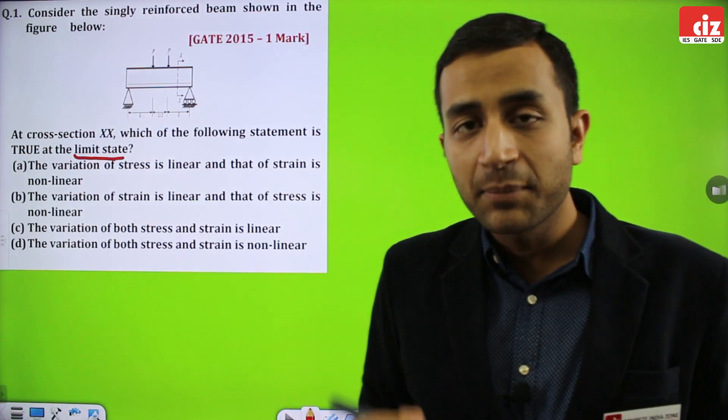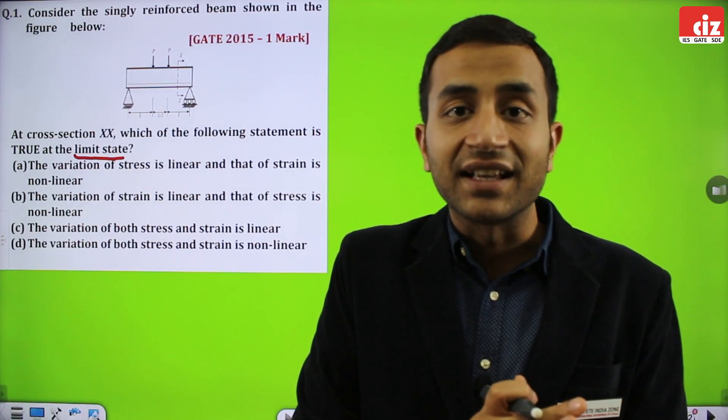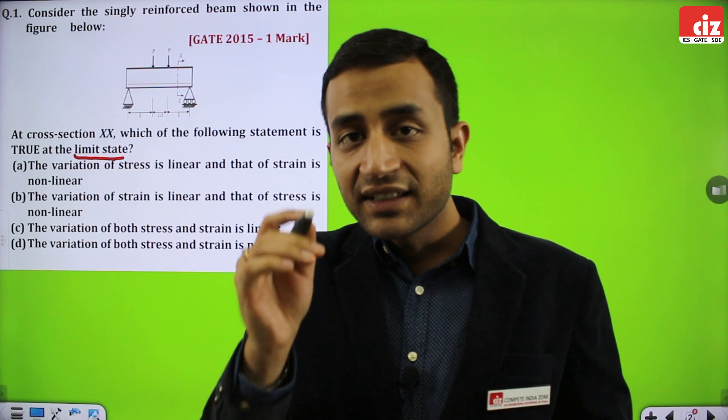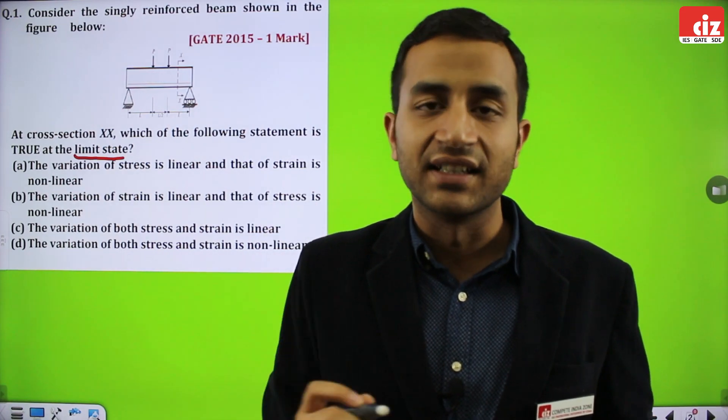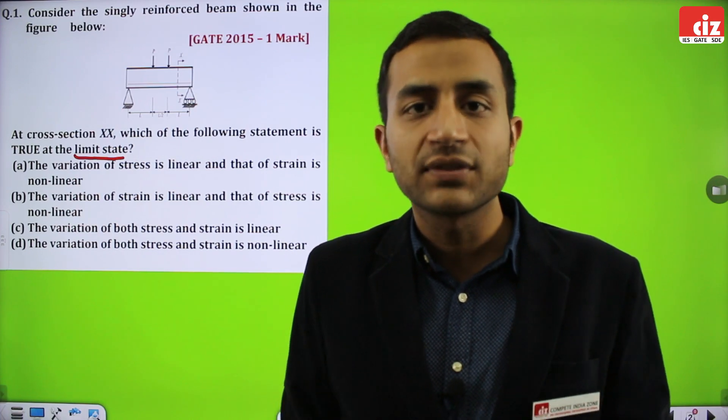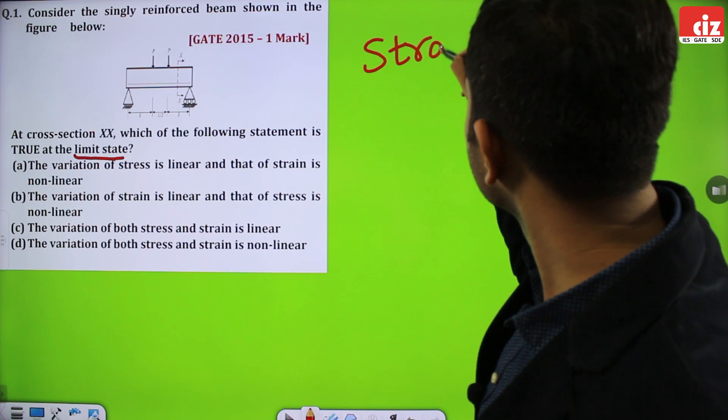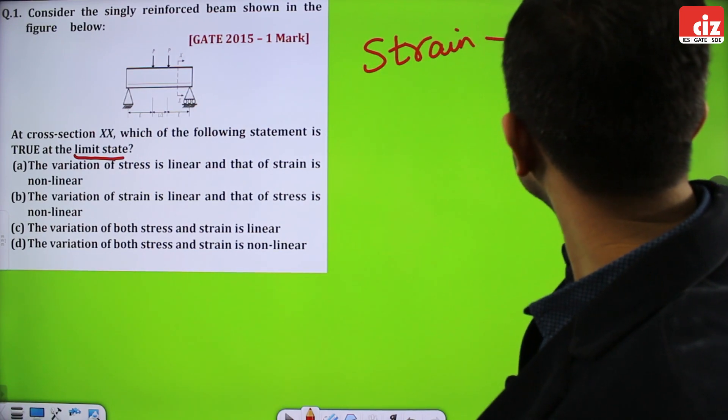We have to keep a basic assumption of the design of structures. What is the assumption? The plane sections which were plane initially, they remain plane even after bending. This implies that the strain diagram is always linear. The strain diagram is linear. This is the basic assumption of IS 456-2000.